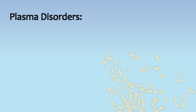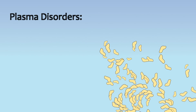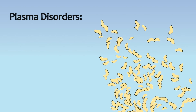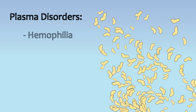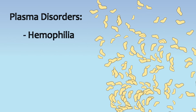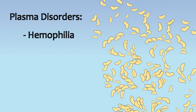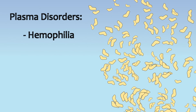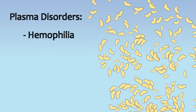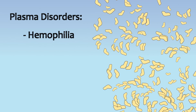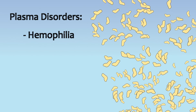Most plasma-related disorders are involved with plasma's role in helping platelets in the clotting process. Hemophilia is one of them — it is a deficiency of certain types of proteins that aid in the clotting process.